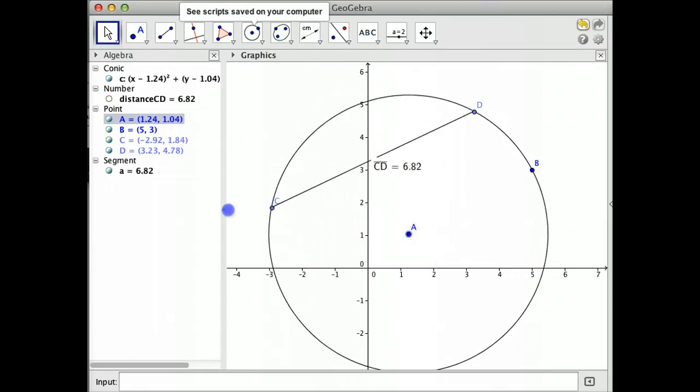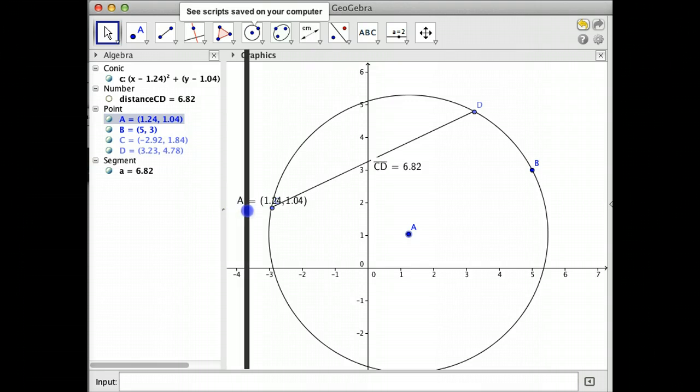Also, off to the left, this also gives you your equation of your circle. So I'll kind of pull that out so you can see it. So in kind of a general form, which is nice. And so there's your segment length. And there's also the distance from C to D.